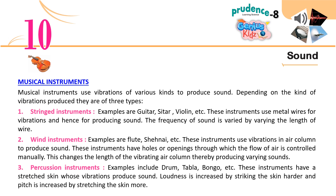Musical instruments use vibrations of various kinds to produce sound. Depending on the kind of vibrations produced, they are of three types. One: Stringed instruments. Examples are guitar, sitar, violin, etc. These instruments use metal wires for vibrations and hence for producing sound.